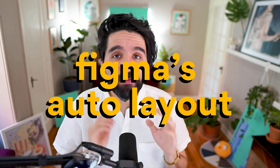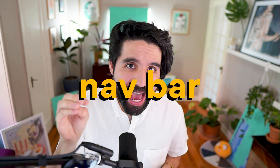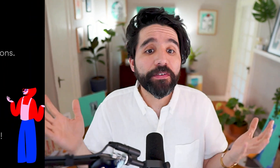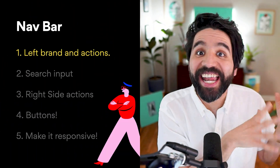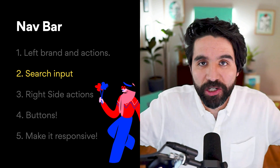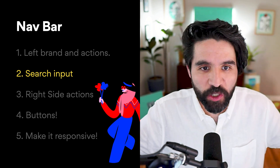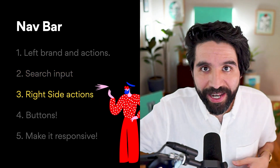Hello, my name is Pablo Stanley and this is part of a crash course on Figma's Auto Layout. In this lesson we're going to design a nav bar. First we'll do the left side with the branding and actions, then we'll create a search text input that expands, and finally the right side actions.